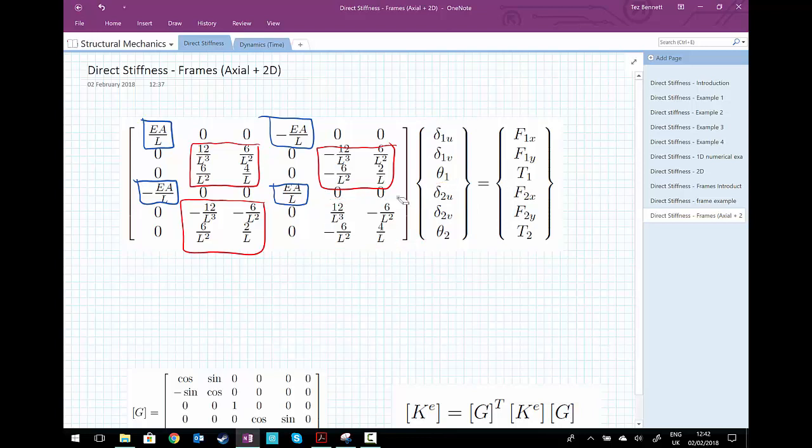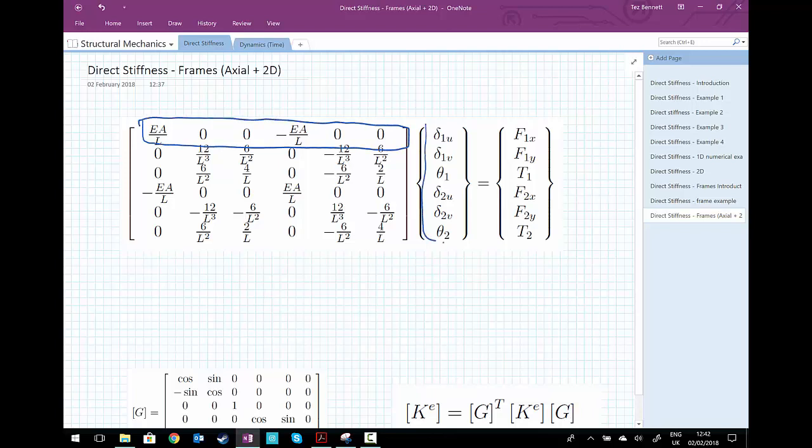There are some important things to consider. If we look at this row and multiply by the column of unknown displacements, notice that the axial forces only ever multiply by the displacement along the bar. We have zeros here and here where we're multiplying by the transverse displacement or by the rotation. So the axial effects are not fully coupled with the beam effects, the bending effects.